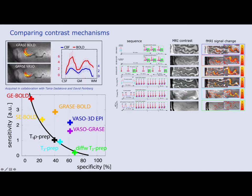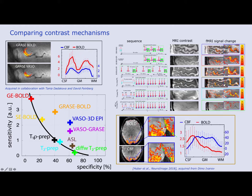We are continuously trying to beat VASO. For example, in collaboration with David Feinberg, I compared VASO with 3D GRASE, and was surprised how specific 3D GRASE can be — not as specific as VASO, but more sensitive. Also, in a recent publication, I compared VASO with blood-flow-weighted data acquired in Maastricht, suggesting that cerebral blood flow (CBF) can be more specific than VASO, but at a huge cost in sensitivity.